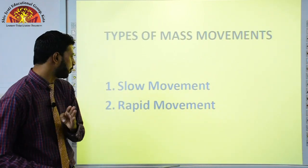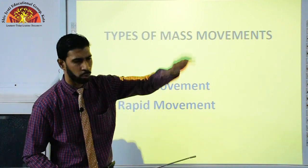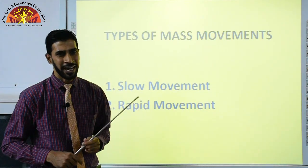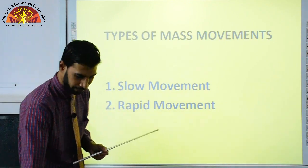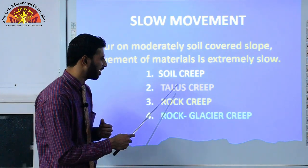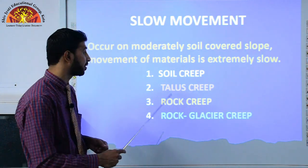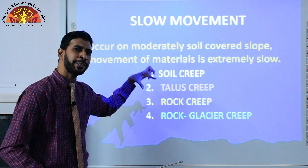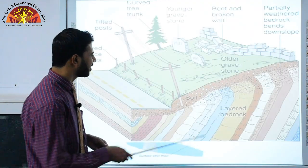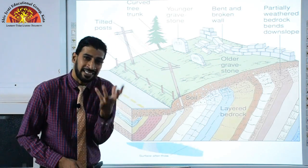Types of mass movement include slow movement and rapid movement. Slow movements occur on moderately soil-covered slopes where movement of materials is excessively slow. These include soil creep, talus creep, rock creep, and rock glacier creep. Creep is such a slow process that you cannot even observe it happening — it is taking place underneath the surface.